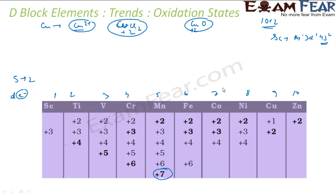The stability of the oxidation state of a transition metal actually depends on the nature of other groups attached to it. Depending on whether it's chlorine or fluorine, that also determines the oxidation state of the transition metal. The transition element which gives the maximum number of oxidation states occurs typically in the middle of the series.